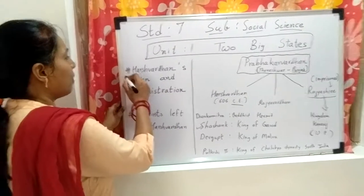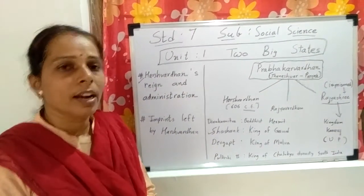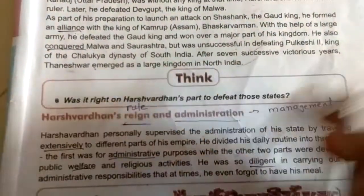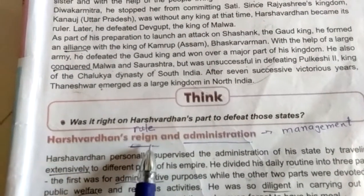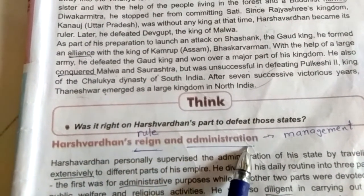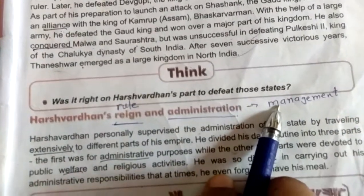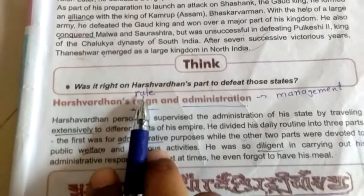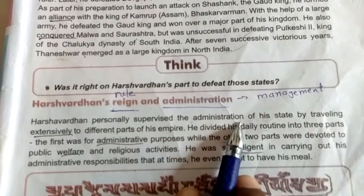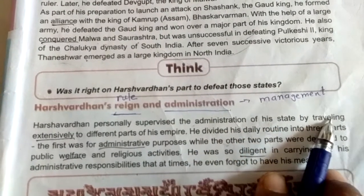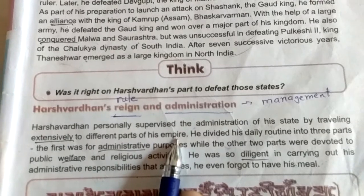Let's start with Harshvardhan's reign and administration from the textbook. We will study about his rule and his management. Administration means management and reign means rule. Harshvardhan personally supervised the administration of his state by traveling extensively to different parts of his empire.